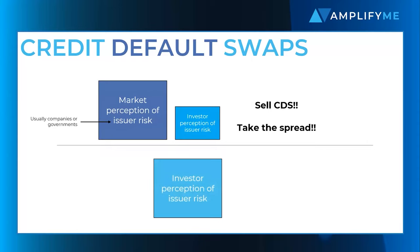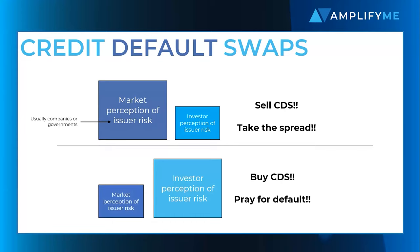On the other hand, if you have a high conviction that the credit quality of the issuer is worse than the market's perception, you might wish to buy CDS in the expectation that the borrower will default and you receive a big payout. In order to effectively short a credit, speculators need to be able to buy CDS without owning the underlying debt. This is called a naked CDS. In fact, it is estimated that naked CDS account for up to 80% of the entire CDS market.